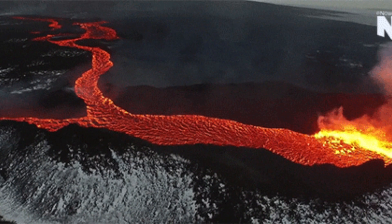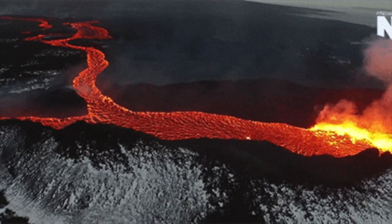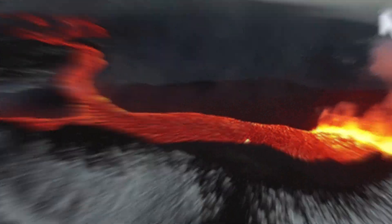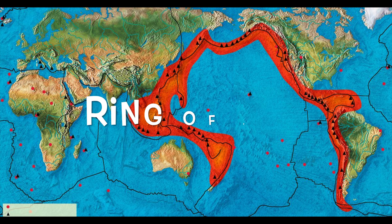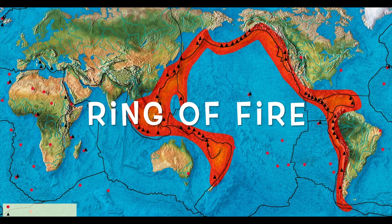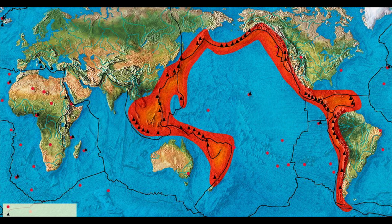Earthquakes and volcanoes often happen along plate boundaries. There are so many earthquakes and volcanoes at the edge of the Pacific Plate that this region is called the Ring of Fire.